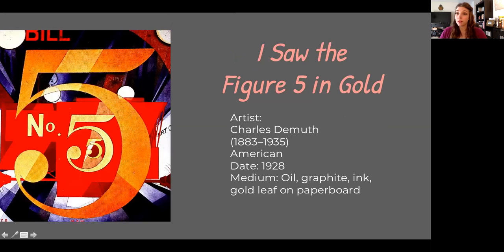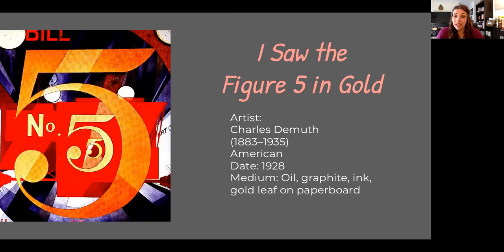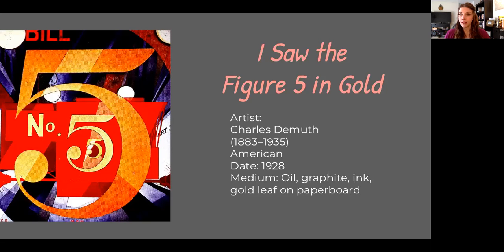His piece — the art piece that I want to inspire your project — is called 'I Saw the Figure Five in Gold.' Take a few seconds to look at that piece. The year it was painted was 1928. The medium was oil, graphite, ink, and gold leaf on paper board — which is the same thing as illustration board. Think about a really thick, nice surface, basically like the back cover of your sketchbook but with really nice paper on top — about that thick.